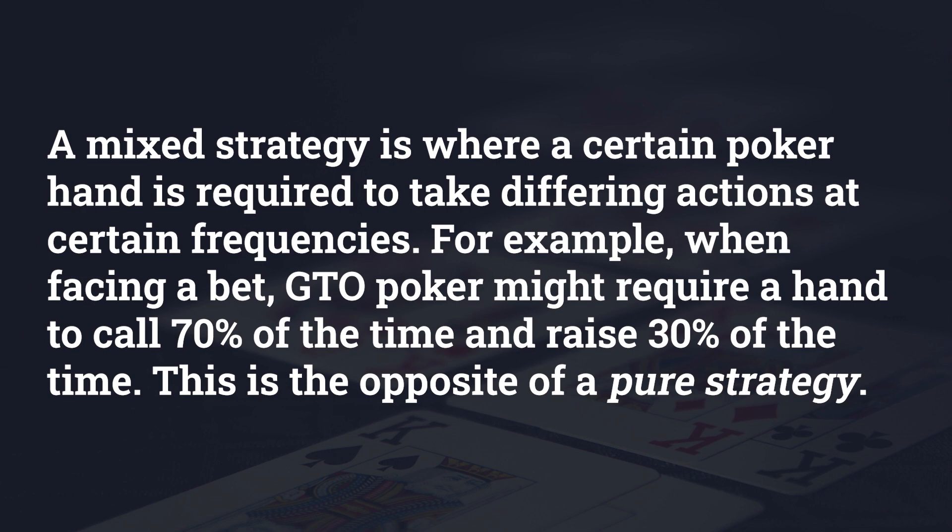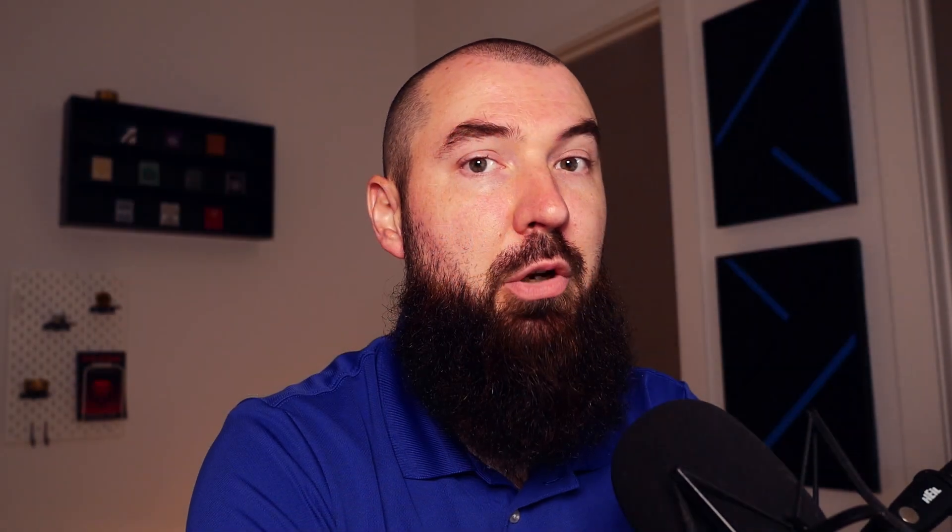So you might see a GTO solver suggest that a hand should be bet 30% of the time and check the other 70% of the time. Contrast this with pure strategies, which are the opposite — this is simply when a hand should do something either 0% of the time or 100% of the time. It's a binary decision when you're looking at something from a pure strategy point of view.